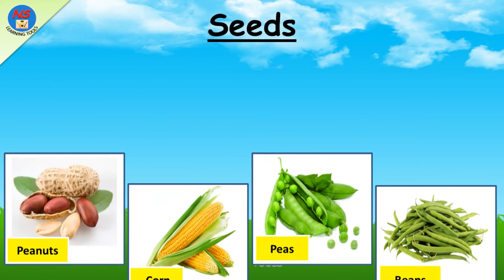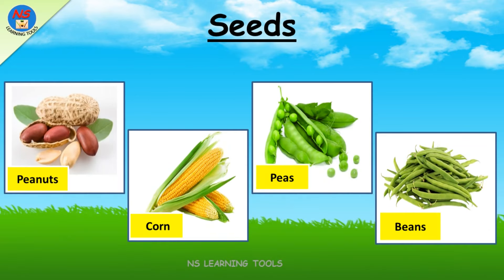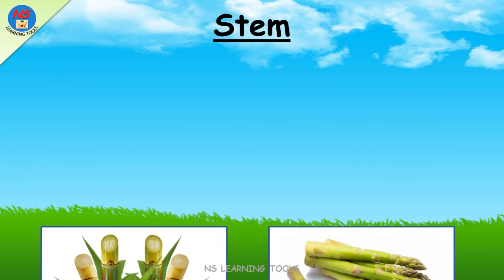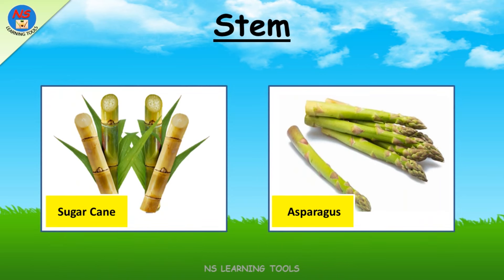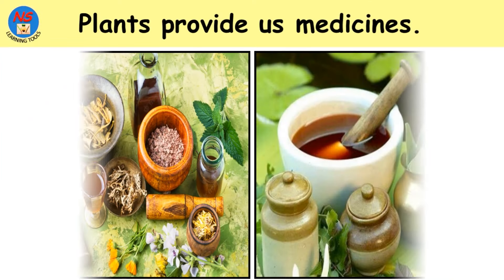Some examples of seed plants: peanuts, corn, peas, beans. Some examples of stem plants: sugar cane, asparagus.